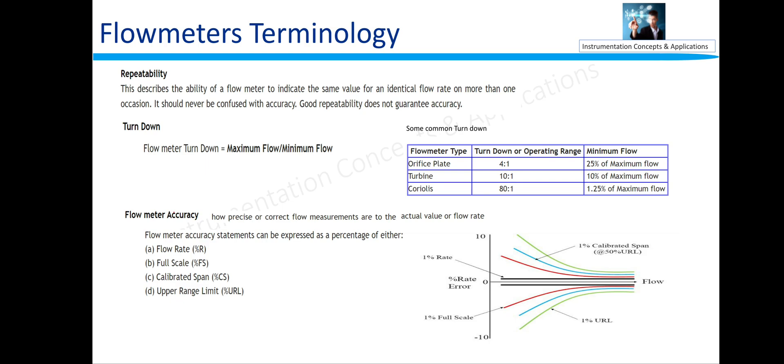Flow meter accuracy statements can be expressed as a percentage of either flow rate, full scale, percentage of span, and percentage of URL. So you can see that the orifice plate has a very less turn down ratio, 4 is to 1. So minimum flow which can be read without any inaccuracy is 25% of the maximum flow only.